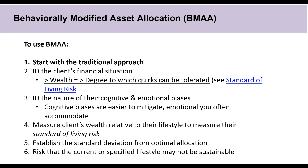There are six steps for BMAA — don't expect the specific steps to be tested, but it's helpful to understand. You start with what the efficient portfolio would look like, then look at their financial situation, understand the degree of risk tolerance and the degree of risk they're able to take. Determining risk tolerance is essentially a standard question on the morning IPS section. Then you look at the nature of their cognitive and emotional biases — cognitive biases are easier to mitigate, while emotional biases often need to be accommodated because they're less rational and less coachable. Once you have the standard of living risk and type of biases, you establish the allowed standard deviation.